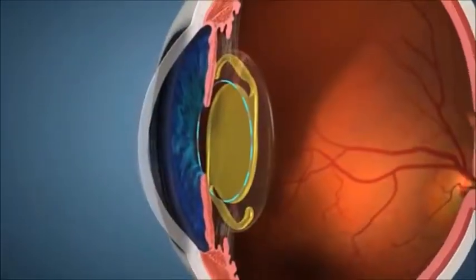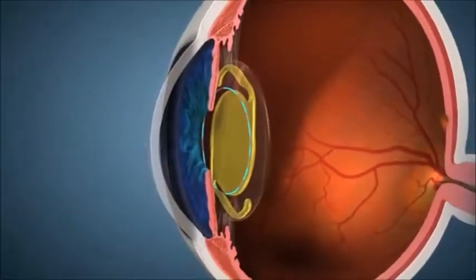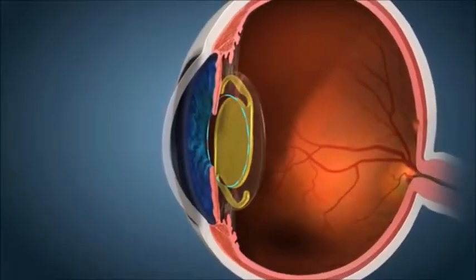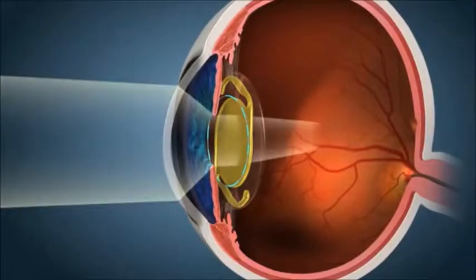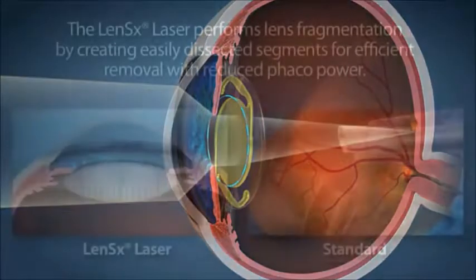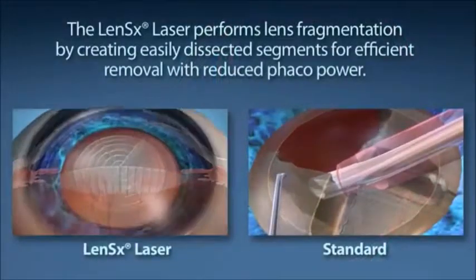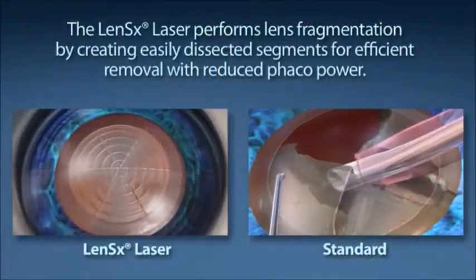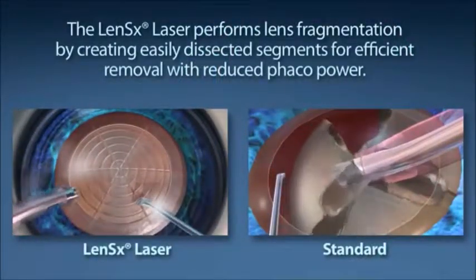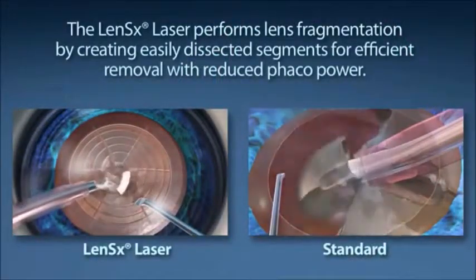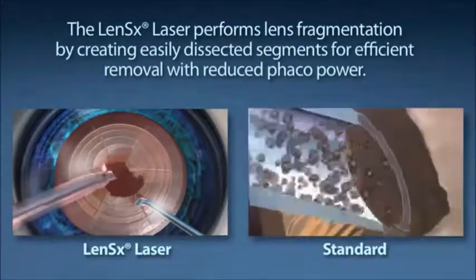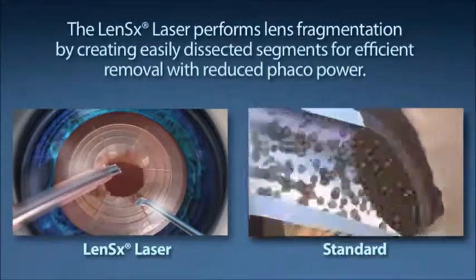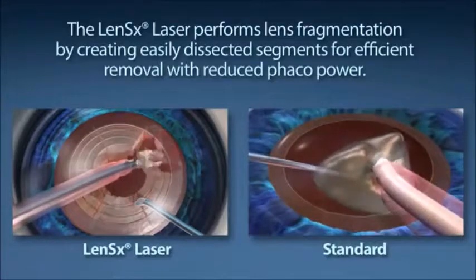The LensX laser allows the lens placed to have the best possible effective lens position, allowing the patient to experience the most predictable post-operative visual results. Standard cataract surgery requires a phacoemulsification machine to segment and remove the content of the cataract. The goal of your surgeon is to reduce the amount of phaco energy used to remove your cataract.